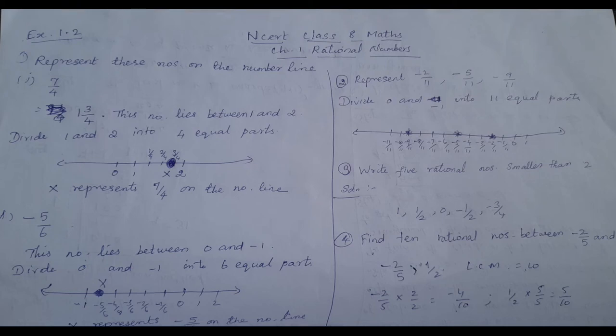Welcome to everyone. In this video, NCERT Class 8 Maths Chapter 1 Rational Numbers Exercise 1.2 problems. Rational numbers on the number line. First problem: represent these numbers on the number line. First is 7 by 4.